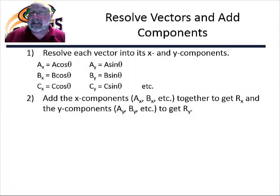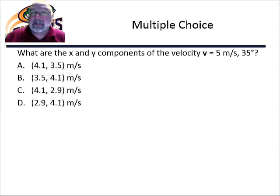If you are subtracting a vector, you just subtract the component. Here's your multiple choice. What are the x and y components of the velocity? 5 meters per second at a polar angle of 35 degrees.